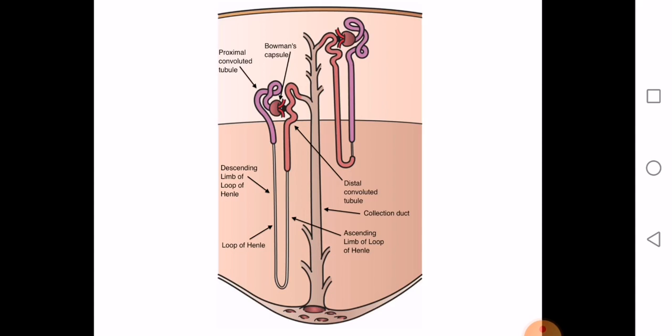To approach the kidney from behind via the Morris parallelogram incision, you cut through the following structures in order: skin, superficial fascia, posterior layer of the thoracolumbar fascia and attached muscles — latissimus dorsi and serratus posterior inferior — then the erector spinae muscle, then the middle layer of the thoracolumbar fascia, then the quadratus lumborum, and finally the anterior layer of the thoracolumbar fascia.